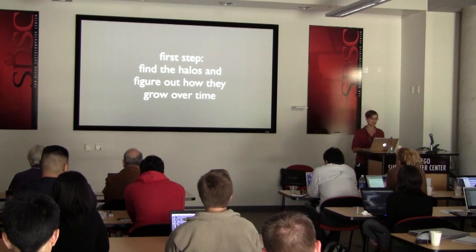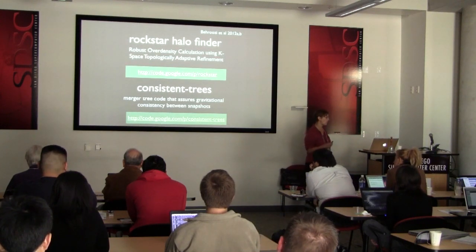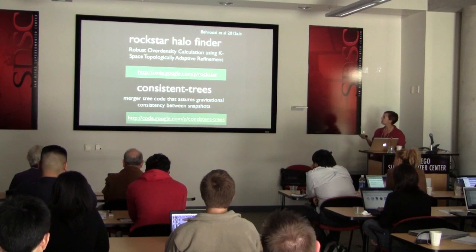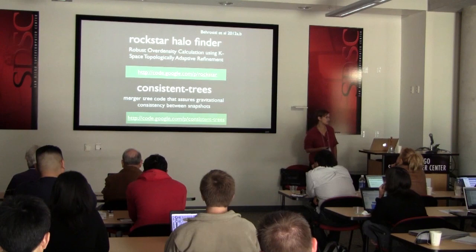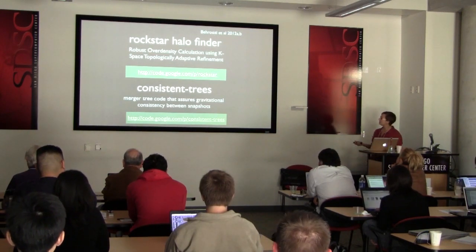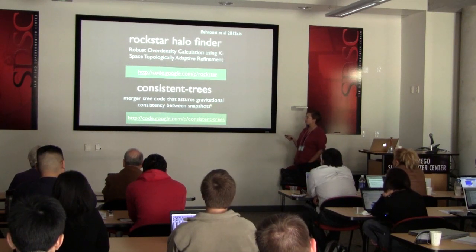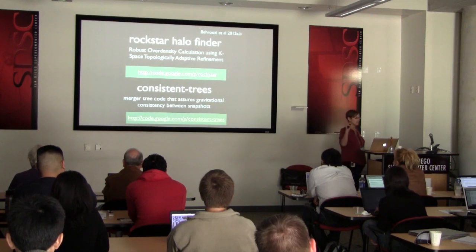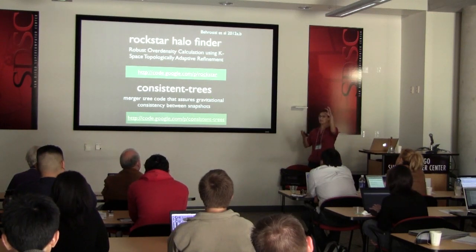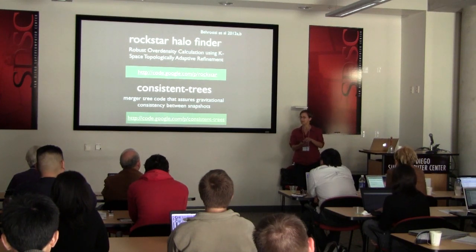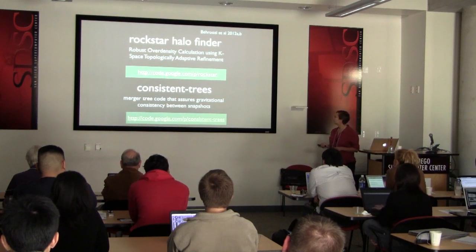As we already heard, the first step is to find the halos and figure out how they grow over time. Peter Beruzzi, over the last year or so, developed two very useful publicly available tools: a halo finder that finds halos in phase space and works very well on large simulations, and a merger tree code that connects halos between snapshots. As far as we're aware, this is the first merger tree code that explicitly checks for gravitational consistency between snapshots — we not only look for halos in phase space, but we assure that halos follow paths allowing them to end up in their descendant halos, which cleans up a lot of messy things that can happen in these algorithms.